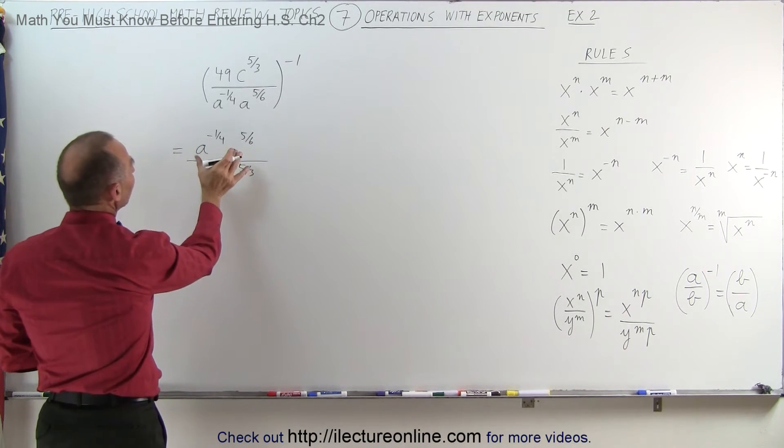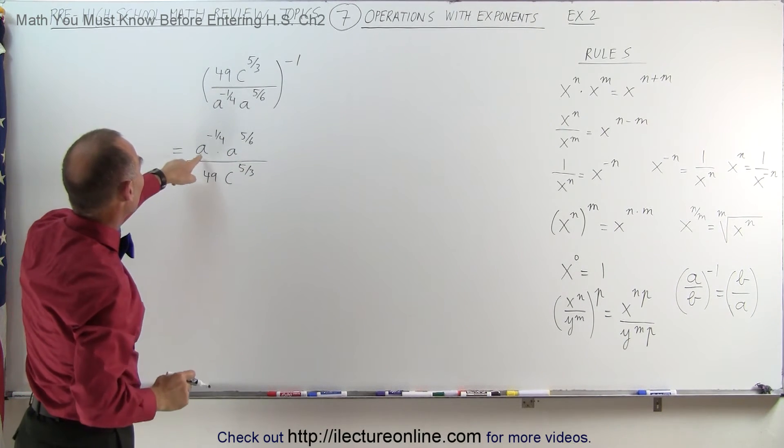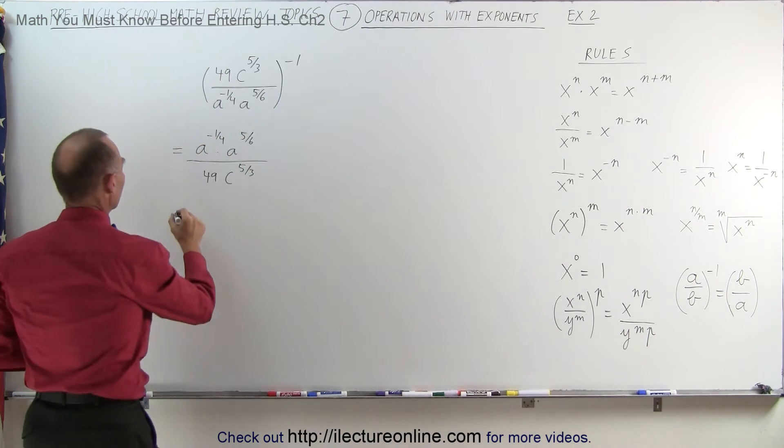Next, I can combine what's in the numerator. Notice that we have the bases the same. We can simply add the exponents. So this becomes equal to